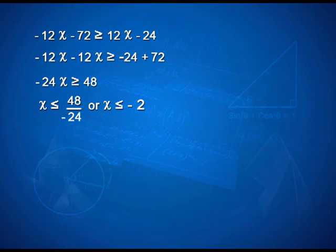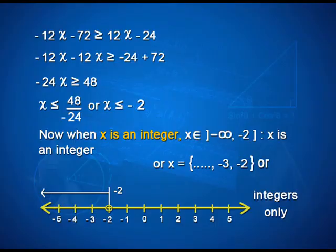Transposing x terms to the left and constants to the right: minus 12x minus 12x is greater than or equal to minus 24 plus 72, or minus 24x is greater than or equal to 48, so x is less than or equal to 48 upon minus 24, since we divided by minus 24, a negative number. Therefore x is less than or equal to minus 2. When x is an integer, x belongs to minus infinity to minus 2 with open bracket at minus infinity and closed bracket at minus 2.